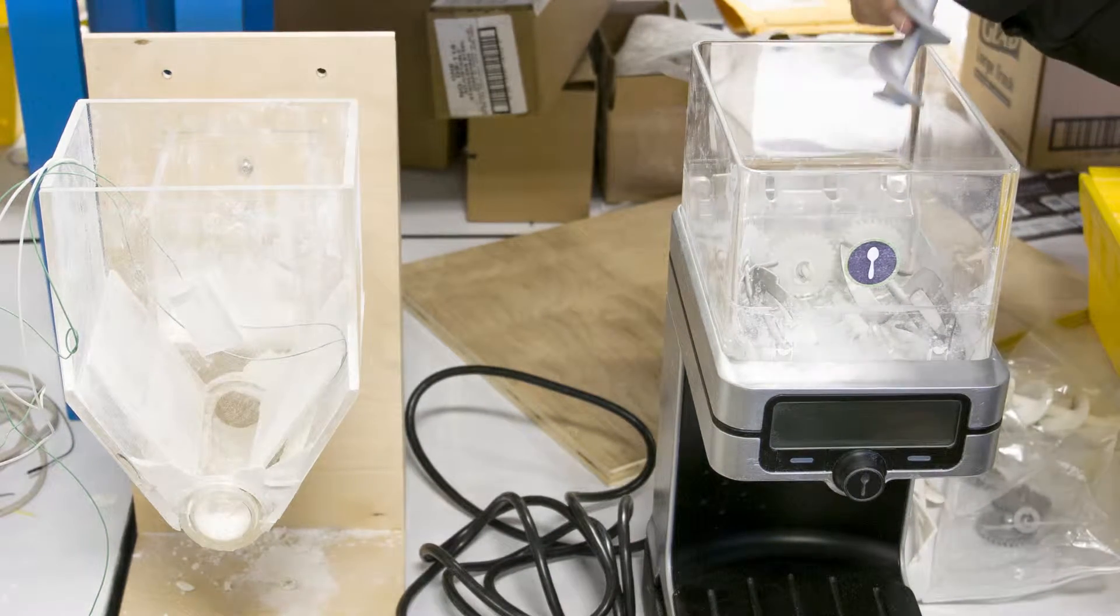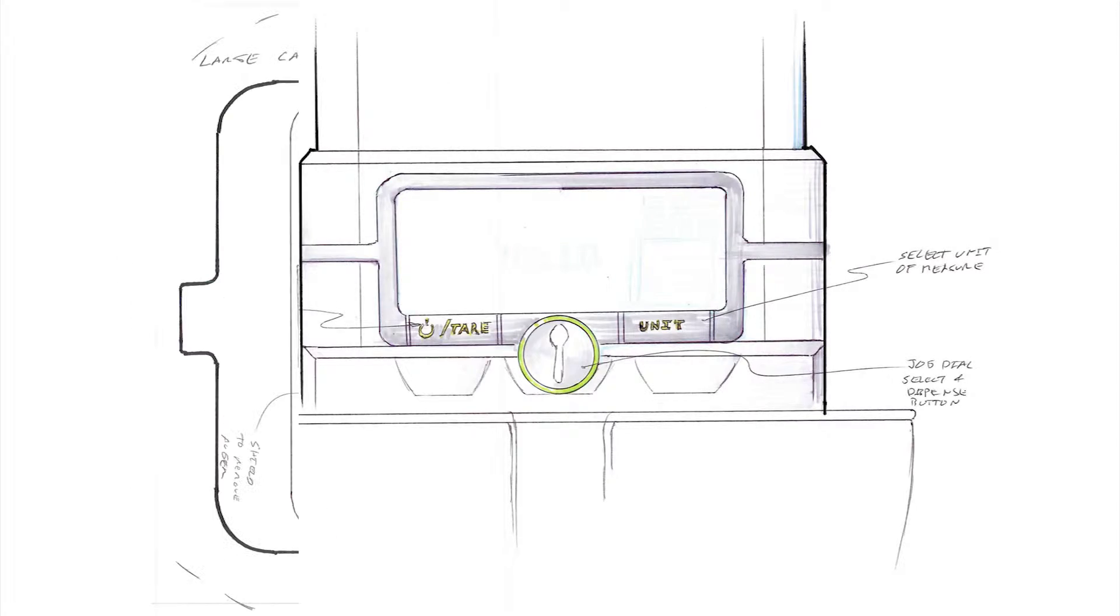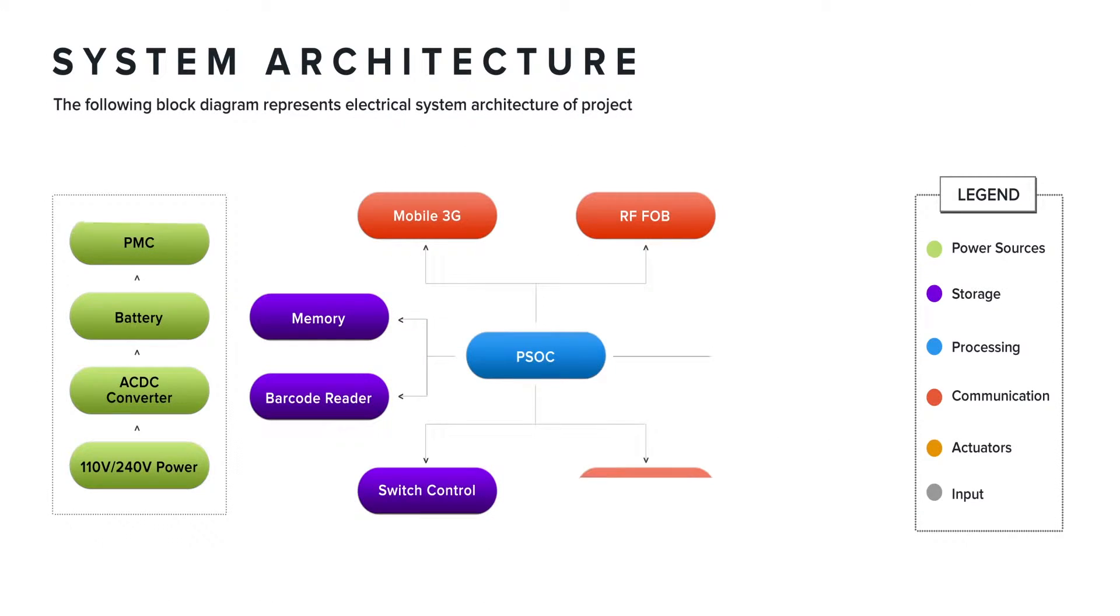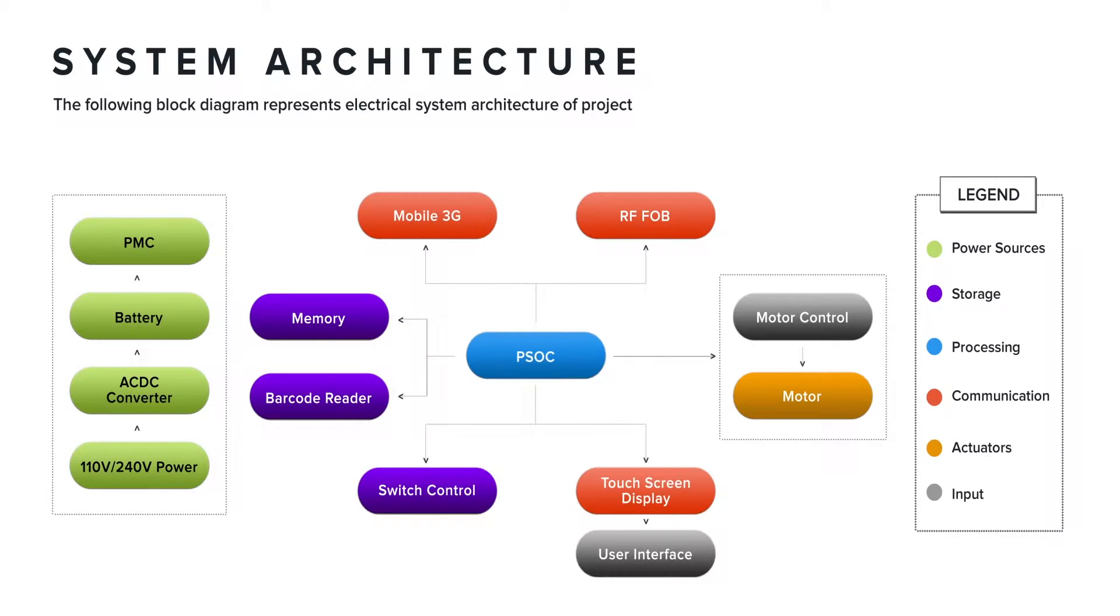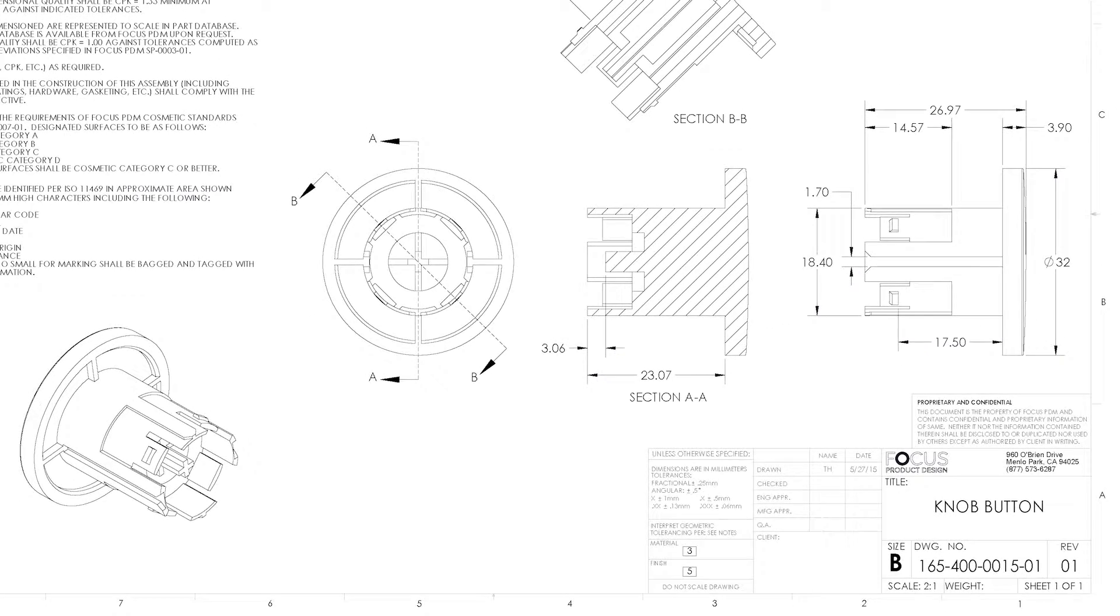Functional prototypes are created from your proof of concept prototype, refined concept sketches, product architecture, 3D CAD drawings and undergo additional testing once the prototype is built.